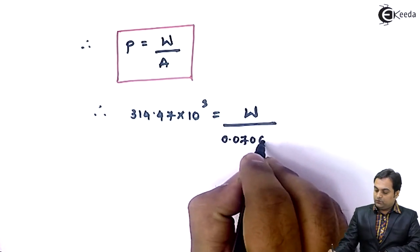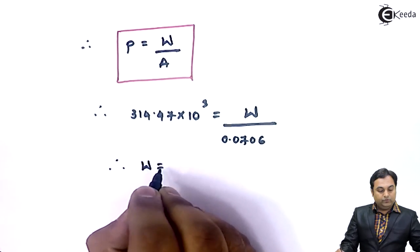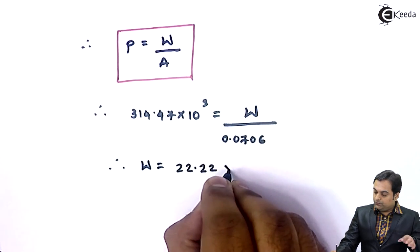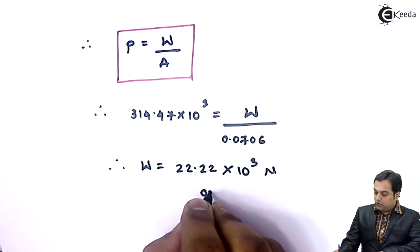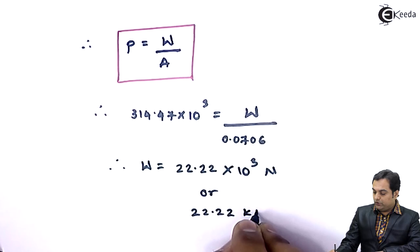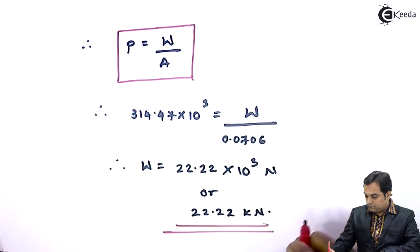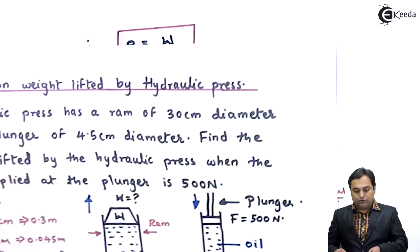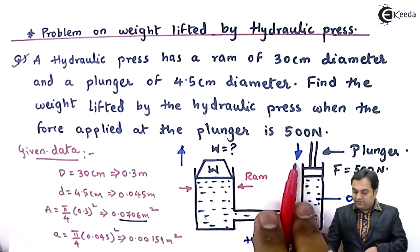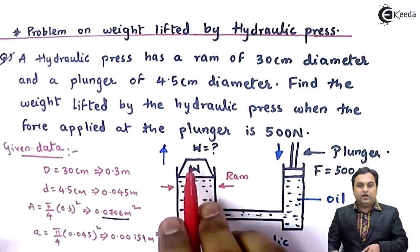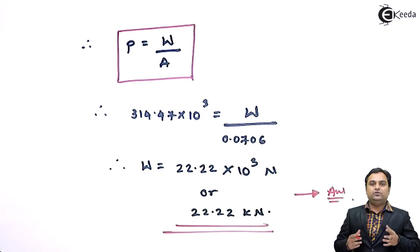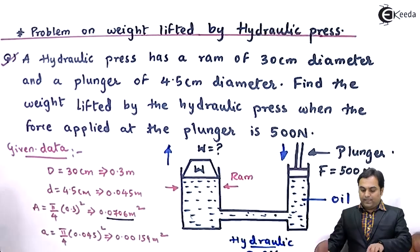Multiplying through, W comes out to be 22.22 into 10 raised to 3 Newton, or 22.22 kilonewton — that is our answer. In this video we have seen the problem of a hydraulic press where by applying 500 Newton at the plunger we lift a load of 22.22 kilonewton. A hydraulic press is used to lift heavy loads by applying comparatively less effort.